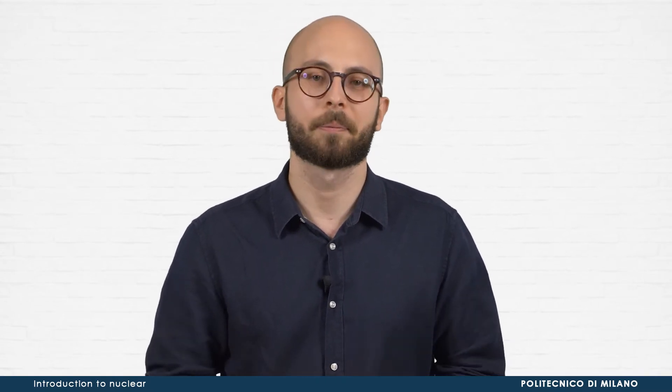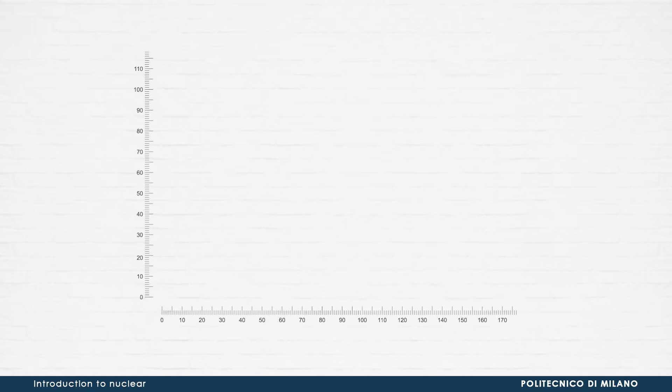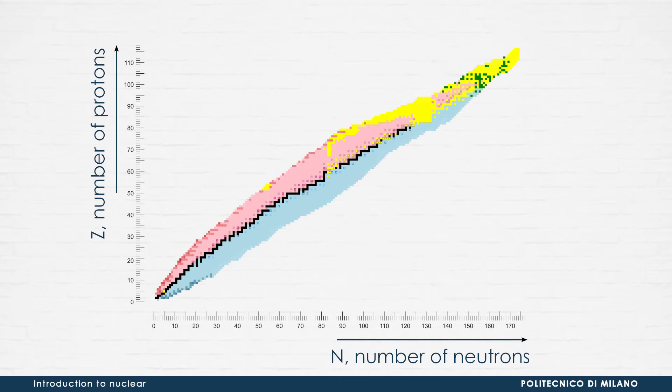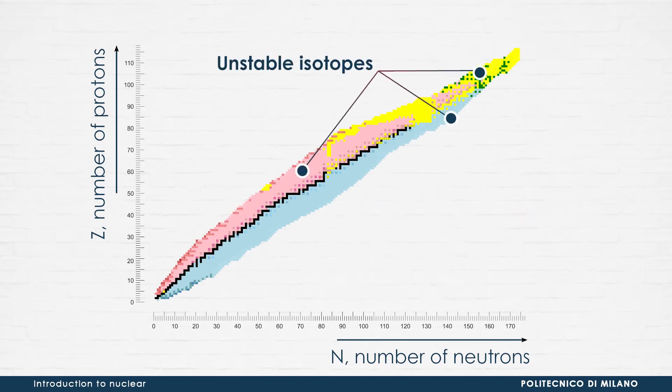Let us go into the details of the actual processes that nuclei use to feel better. To do so, we can make use of the so-called table of nuclides. This table collects all known nuclei, organized by the number of neutrons N on the x-axis, and by number of protons Z on the y-axis. Black regions refer to stable isotopes, while the different colors represent the different decay modes of unstable isotopes.